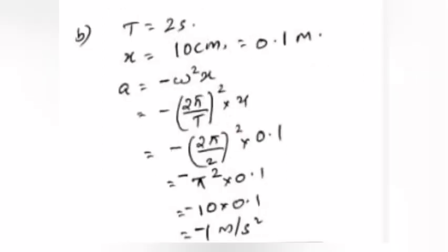Given: T equals 2 seconds, x equals 10 cm equals 0.1 meter. Therefore a equals minus omega squared x.